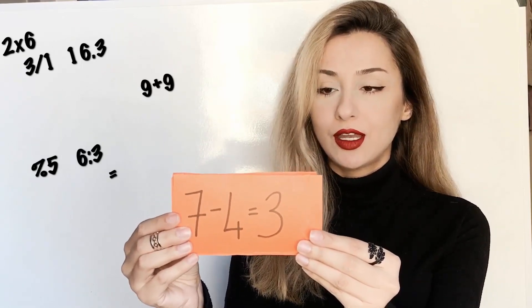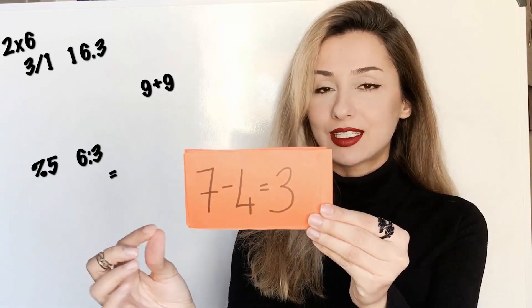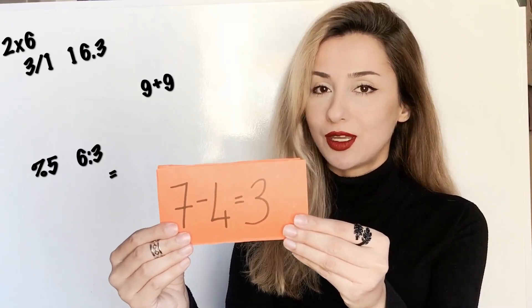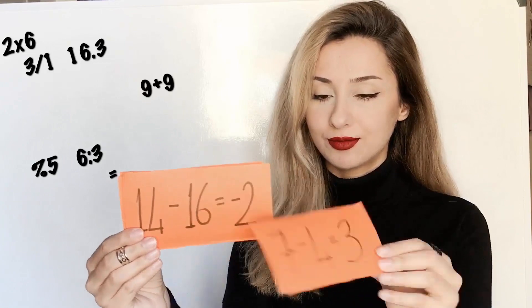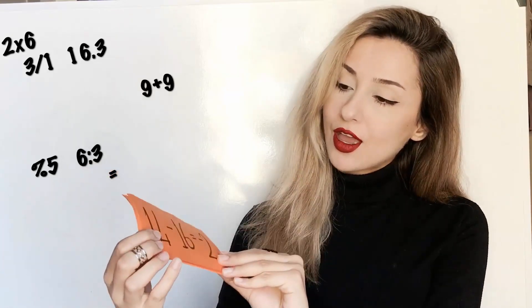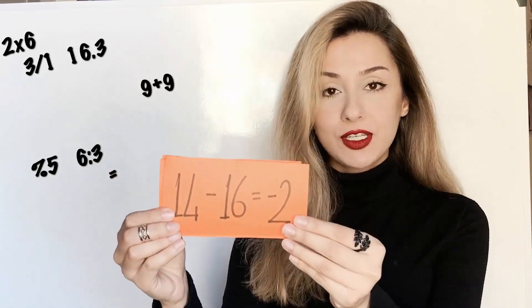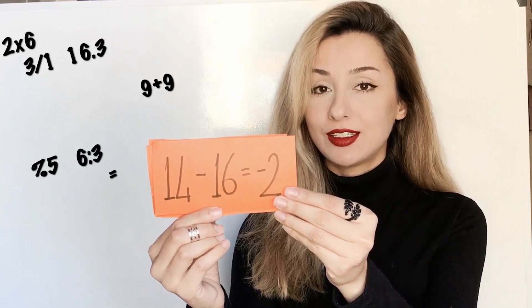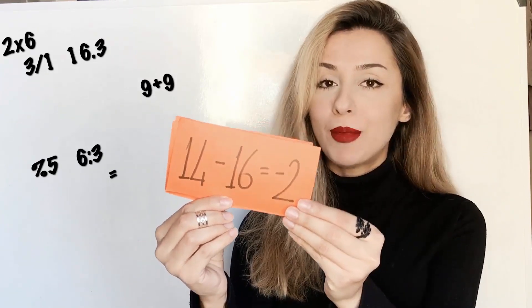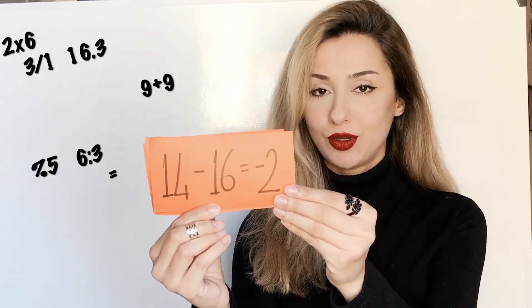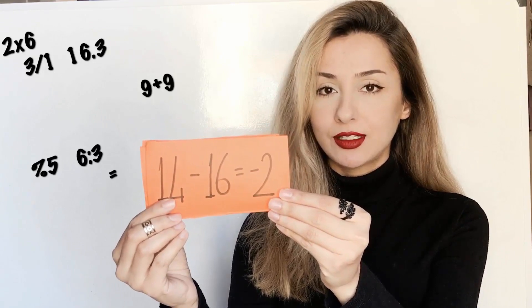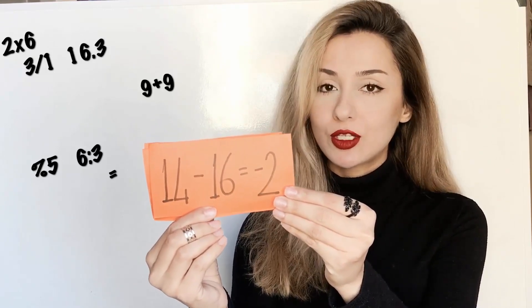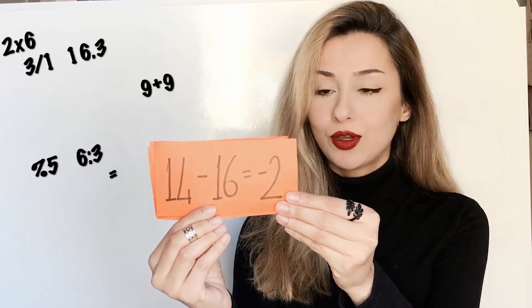Seven minus four equals three. Fourteen minus sixteen equals minus two.